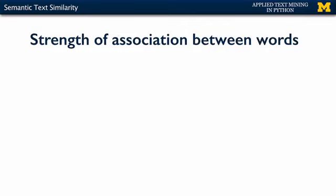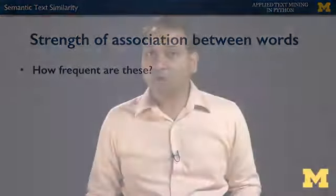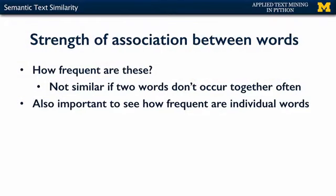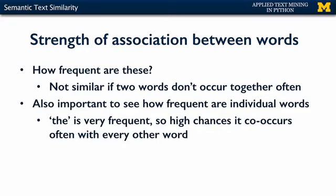Once you define context, you can compute the strength of association between words based on how frequently they co-occur — that's why it's called co-locations. If two words keep coming next to each other, they are highly related. However, it's important to account for word frequency; the word the is so frequent it co-occurs with nearly every word, which would inflate similarity scores. We need to normalize for this so that very frequent words don't override the other similarity measures.